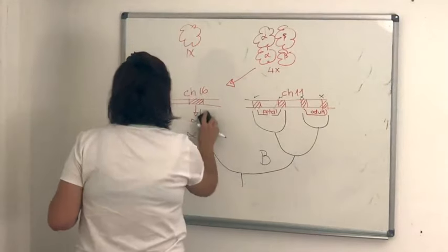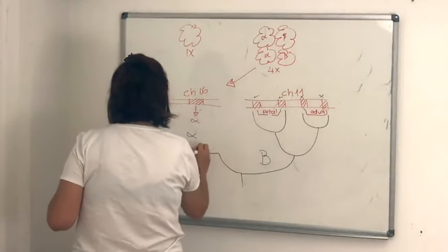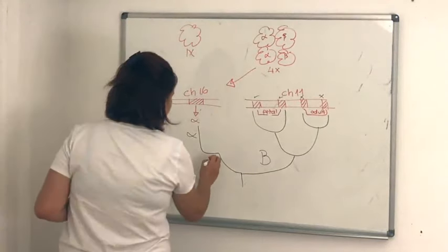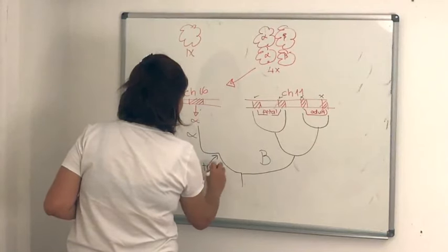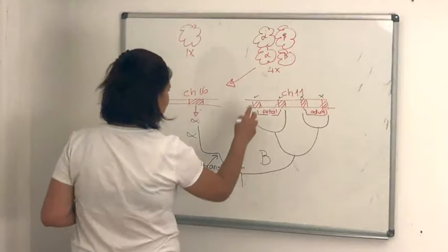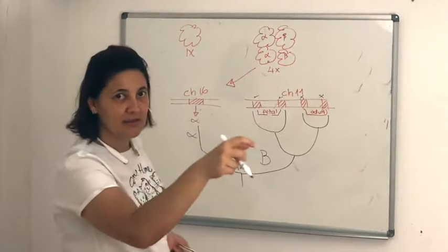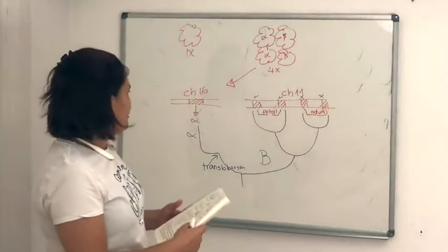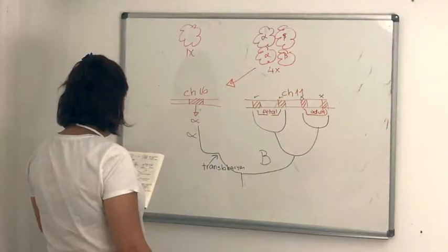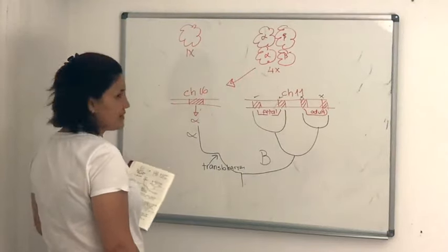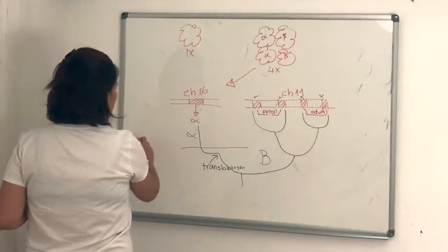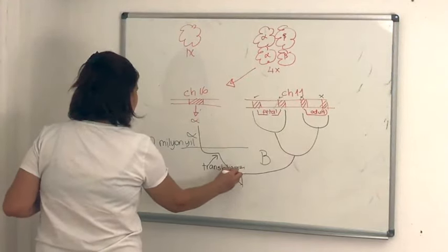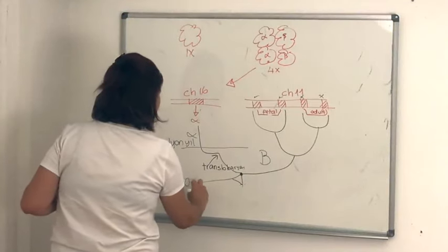Alfa ve beta genlerini farklılaştıran translokasyonun olduğunu göstermişler. Yani bir duplikasyon var, o duplikasyon iki geni yan yana götürüyor. Ama bu sefer kromozom 11'den kromozom 16'ya nasıl atladı? Onun için bir translokasyon gerekiyor. O translokasyon olayını da burada bu şekilde göstermişler. Ve buraya bir zaman çizelgesi çizebiliyorlar. Çok uzun bir süreçten bahsediyoruz: bu tam duplikasyonun olduğu yerde 500 milyon yıldan bahsediliyor.